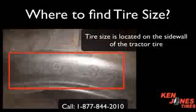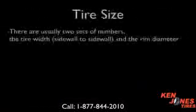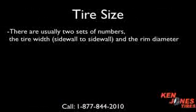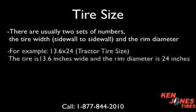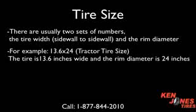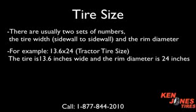The tire size is located on the sidewall of the tractor tire. There are usually two sets of numbers: the tire width sidewall to sidewall, and the rim diameter. For example, 13.6 by 24 — the tire is 13.6 inches wide and the rim diameter is 24 inches.